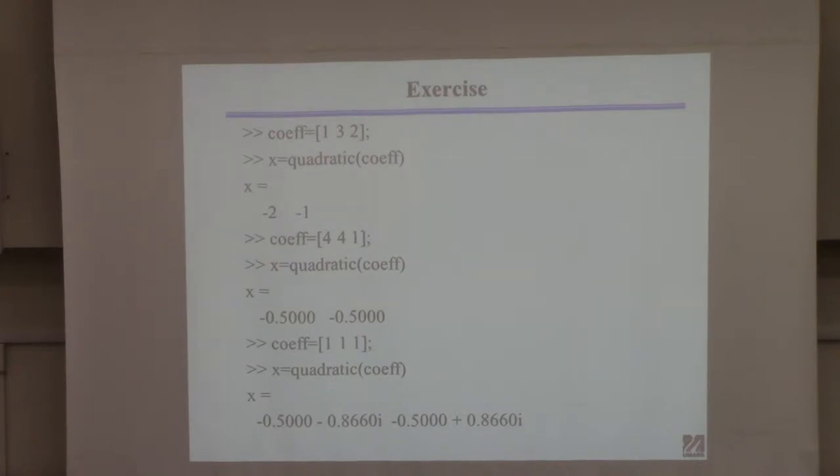And then you're going to solve the equation, return the answer. Obviously, there's two roots, right? You calculate both roots. You save the first root in x1. Save the second root in x2. Put a semicolon so it doesn't print out. So you want to do something like that.